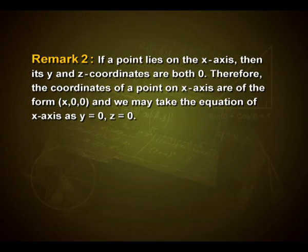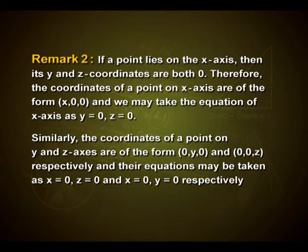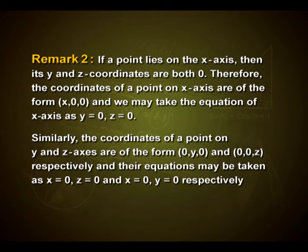If a point lies on the x-axis, its y and z coordinates are both 0. Therefore, coordinates of a point on the x-axis are of the form (x, 0, 0) and the equations of the x-axis are y = 0 and z = 0. Similarly, the coordinates of a point on the y-axis and z-axis are of the form (0, y, 0) and (0, 0, z) respectively, and their equations are x = 0, z = 0 and x = 0, y = 0 respectively.